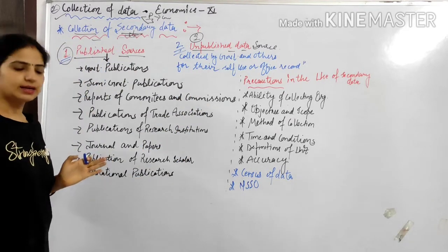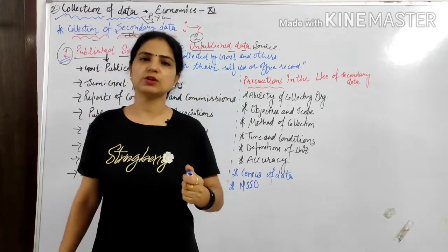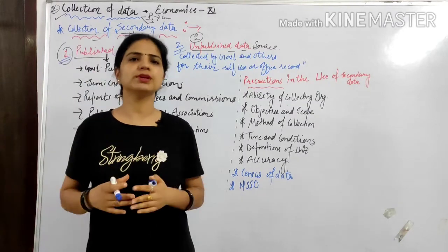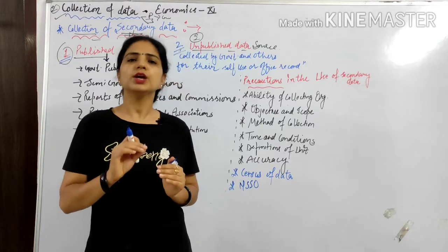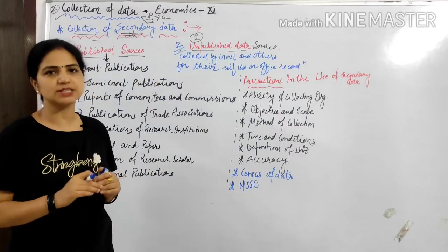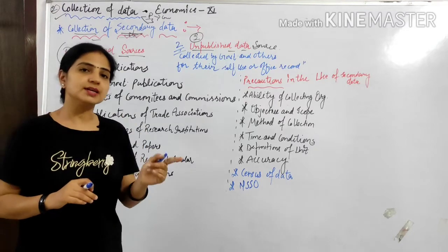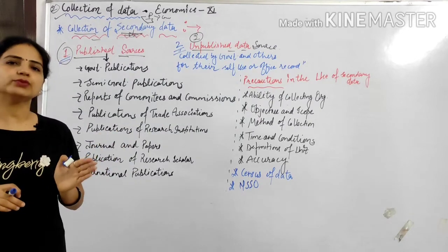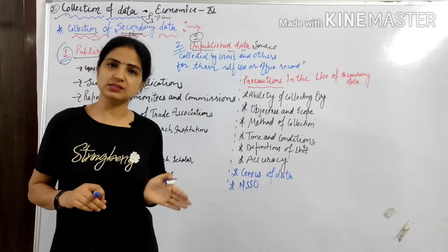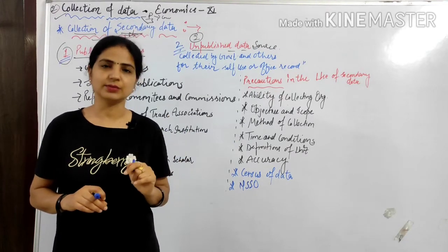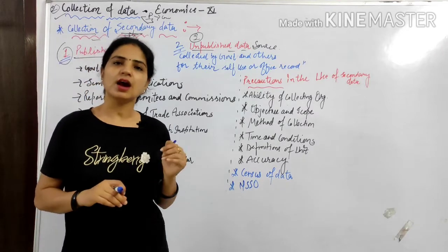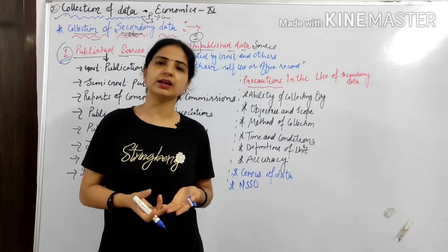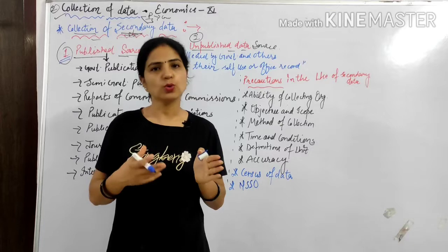Let me give you an example with an economic project. If you have to find the average income of 10 families in a colony, you could collect that as primary data. But you can also collect it from Google, magazines, or newspapers — that is an example of secondary data. So newspapers, magazines, journals, Google, or research books are called published or unpublished sources.